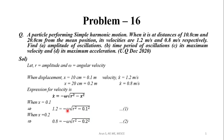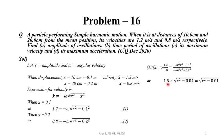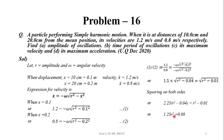We will solve for omega and r simultaneously. Dividing equation 1 by equation 2: 1.2/0.8 = √(r² − 0.1²) / √(r² − 0.2²), giving 1.5 = √(r² − 0.01) / √(r² − 0.04). Squaring both sides: 2.25(r² − 0.04) = r² − 0.01. Rearranging gives 1.25r² = 0.08, so the amplitude r = 0.253 m.